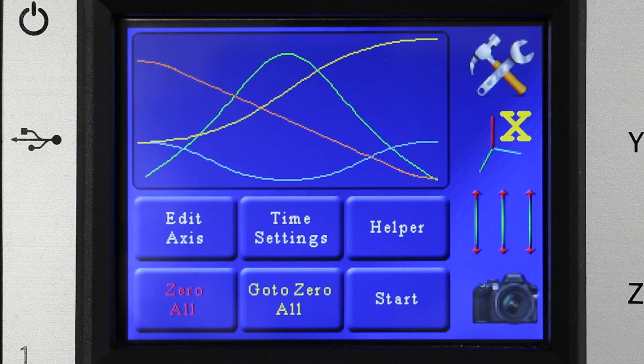So here we have a three axis move that's controlling two rotary tables and a slider. And this video is about editing the axes.